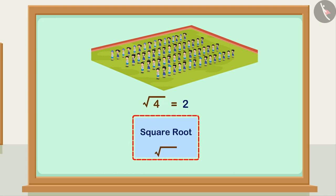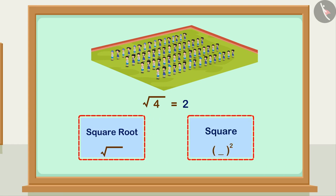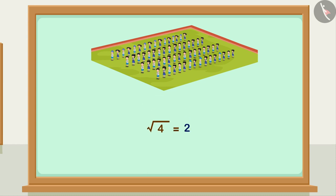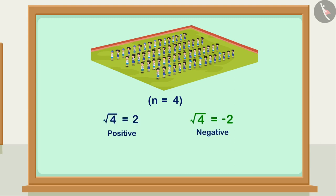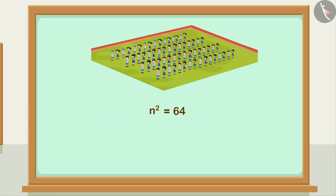Finding the square root is the inverse operation of squaring. Now, is 2 the only possible square root of 4? The square of minus 2 is also 4, so minus 2 is also a square root of 4. We can say that a natural number n has two square roots — one positive and one negative — shown as positive and negative square roots.